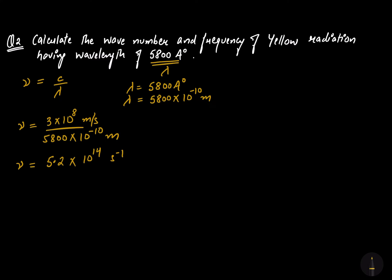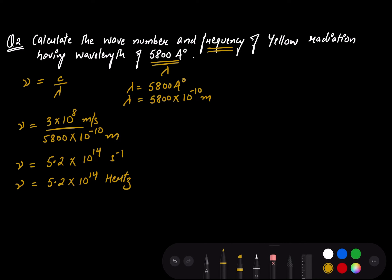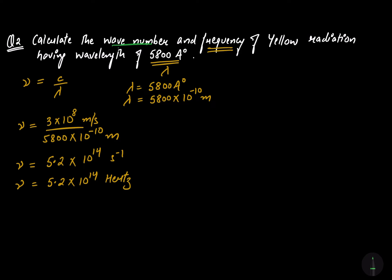So the frequency is 5.2 × 10¹⁴ hertz — per second and hertz mean the same thing. That completes the frequency calculation. Now let's talk about the wave number.